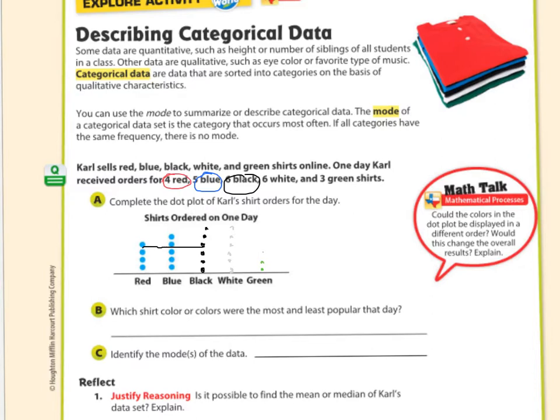Which shirt color or colors were the most and least popular that day? The most popular are going to be the tallest row of dots. Most popular was black and white. And then least popular was green. No sense of adventure. Identify the modes of the data. The modes are going to be six, or unless they want us to name the colors, the mode would be black and white.